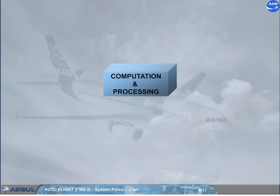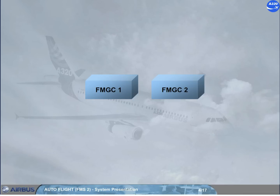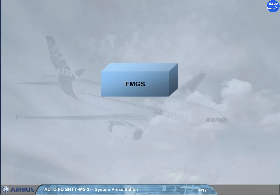For the AFS in the A320 family, computation and processing are done by two Flight Management Guidance Computers, FMGCs. The two FMGCs are identical and normally work together, so for training purposes we will group them as the Flight Management Guidance System, FMGS.